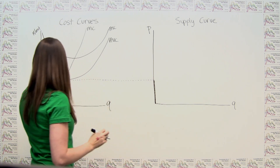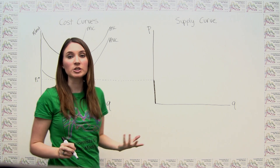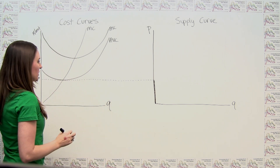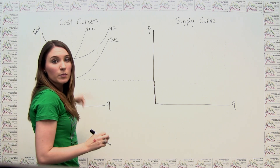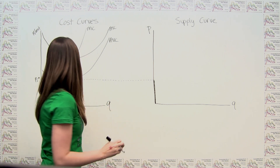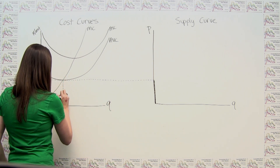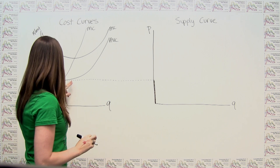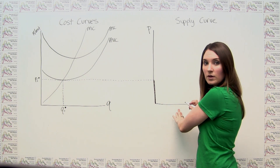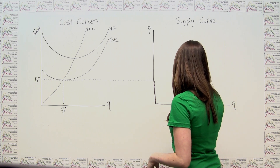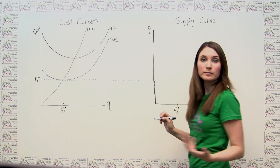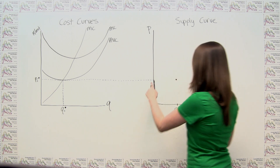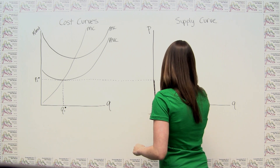Once we hit this threshold and overcome the shutdown condition, making the firm actually want to produce, how much will they produce? At P1 star, profit is maximized where price equals marginal cost, so our firm is going to want to produce Q1 star. Labeling Q1 star on our supply curve, we see that once we hit this price, output jumps from zero to Q1 star.